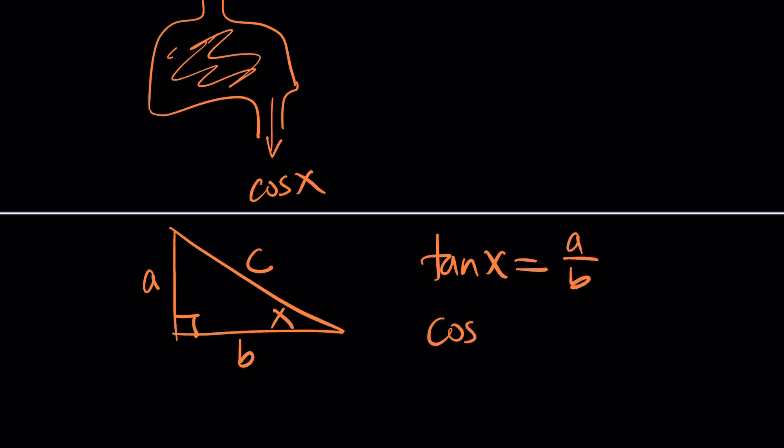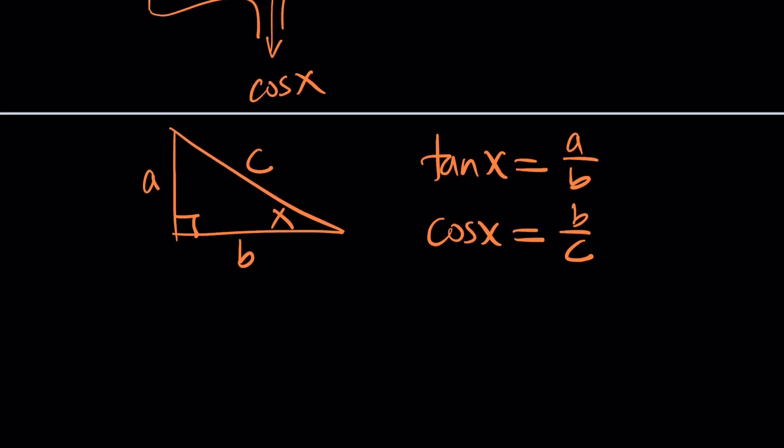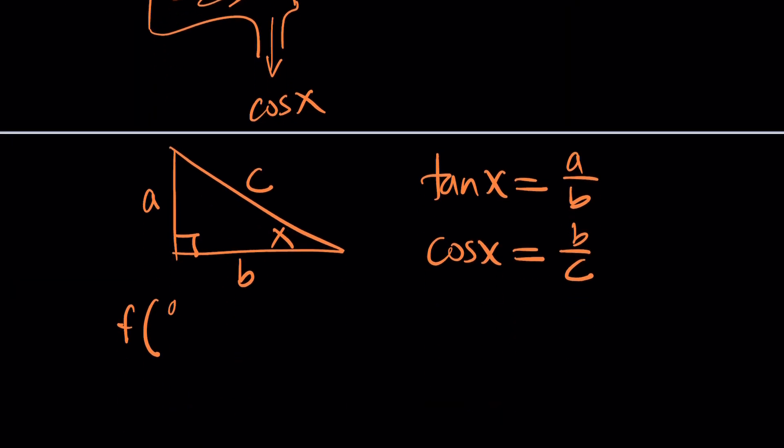and cosine x would be b over c. Adjacent over hypotenuse. Great, so we're basically looking for something that will take tangent x, which is a over b, and will turn it into b over c.